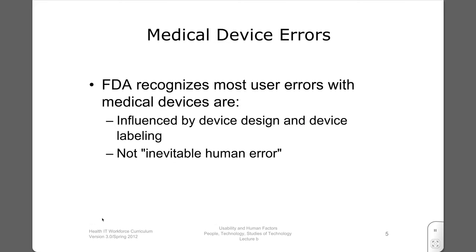The Food and Drug Administration is the government body that oversees and approves medical devices. The FDA recognizes that most user errors with medical devices are influenced by device design and device labeling — they're not inevitable human error. This may seem obvious, but it's an important point of recognition. Usability is viewed as increasingly important by the FDA, but in many respects their standards are not quite up to what is necessary to achieve a reliable product in terms of usability.